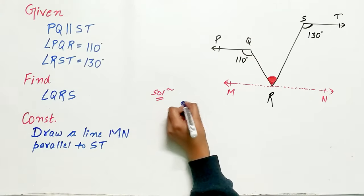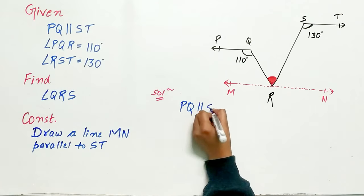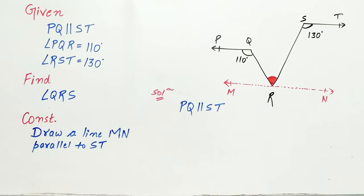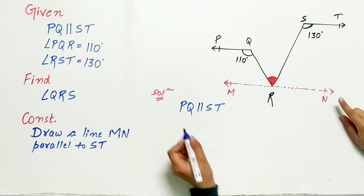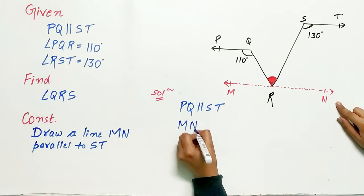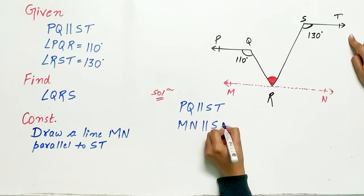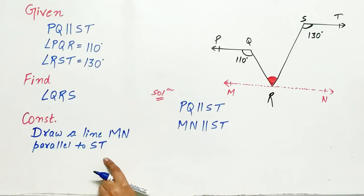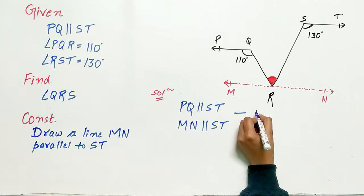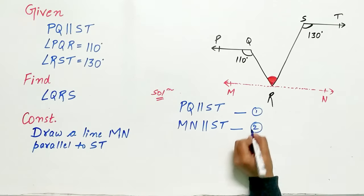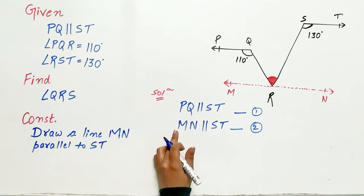We know PQ is parallel to ST and we also know that MN is parallel to ST by construction. So from the first and second statements, can I conclude that PQ is parallel to MN?